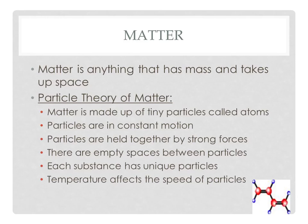Each substance has its own unique particles that create its identity — gold atoms are different from copper atoms, for example. Finally, the last part of the theory says that temperature affects the speed of particles. This is a major key to remember: the more we heat things up, the faster they start moving, and the more we cool things down, the slower they start moving.